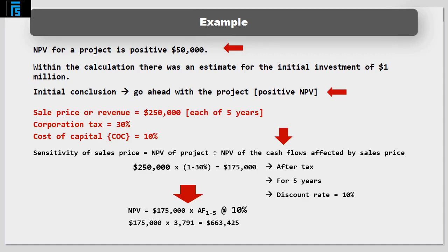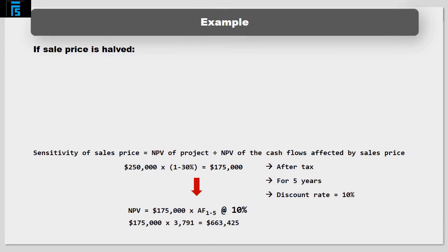If, for example, sales price halved, NPV would reduce by 0.5 times $663,425 equals $331,713.